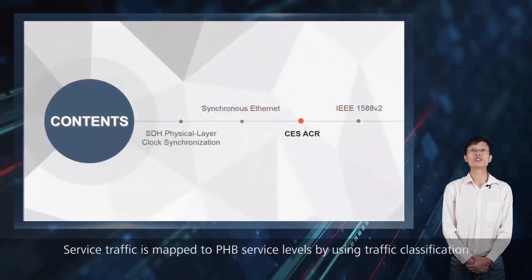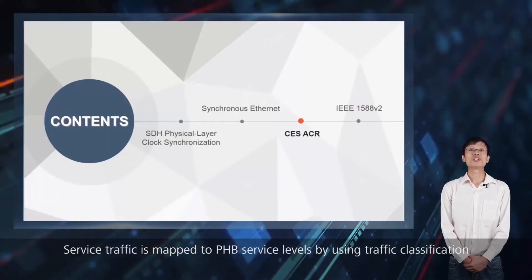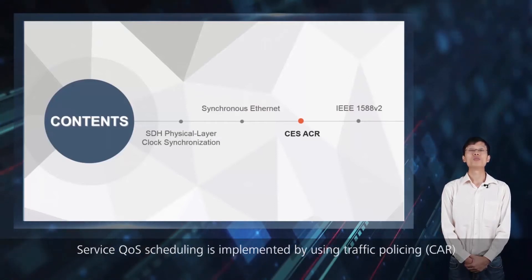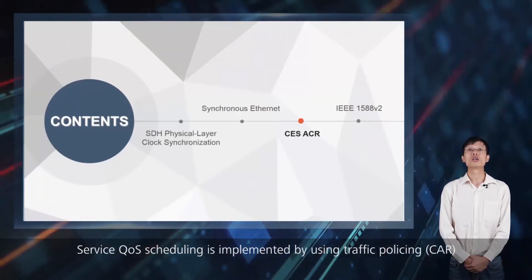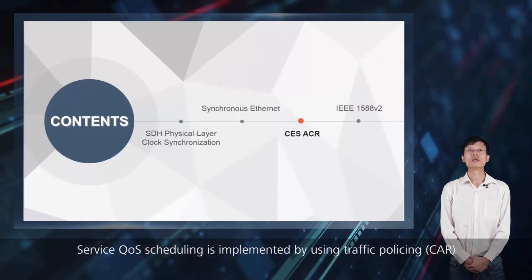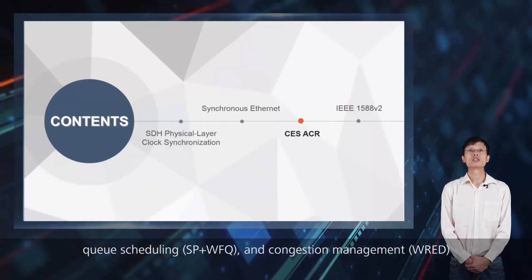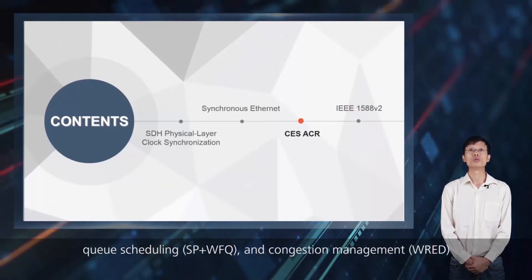Service traffic is mapped to PHB service levels by using traffic classification. Service QoS scheduling is implemented by using traffic policing, CAR, Q scheduling, SP plus WFQ, and congestion management, WRED.